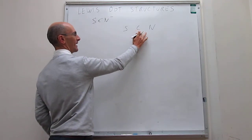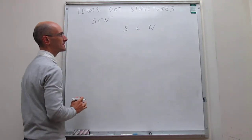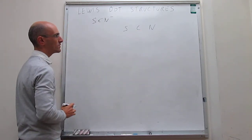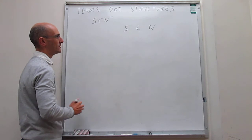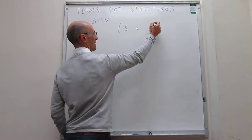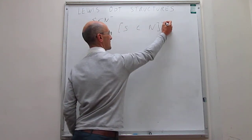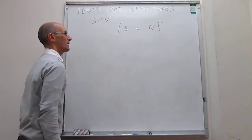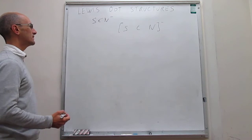The carbon atom is central in the structure, and then the sulfur and nitrogen atoms are terminal, and this ion has a negative charge. So let's get started here.